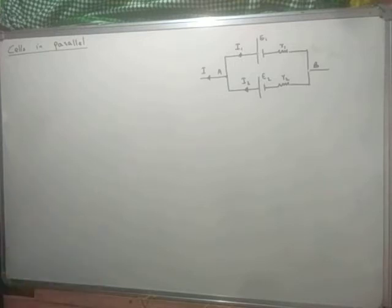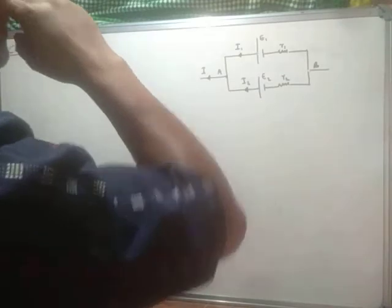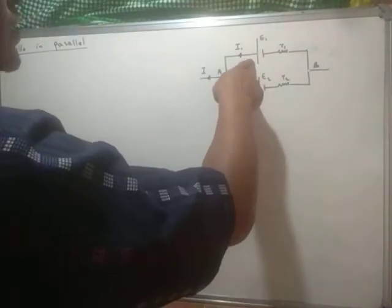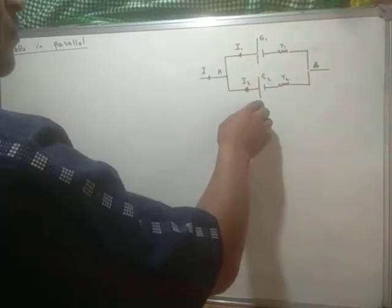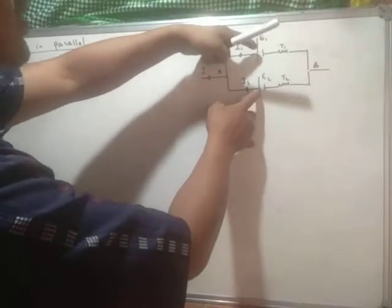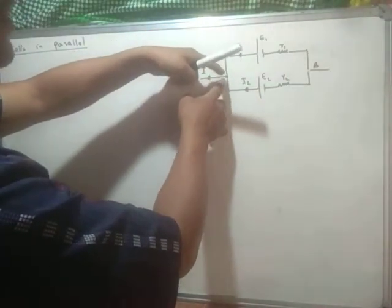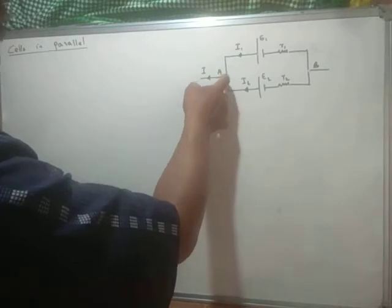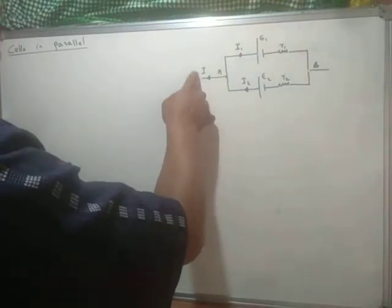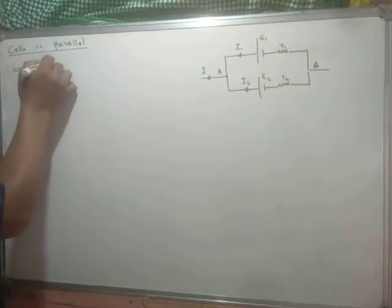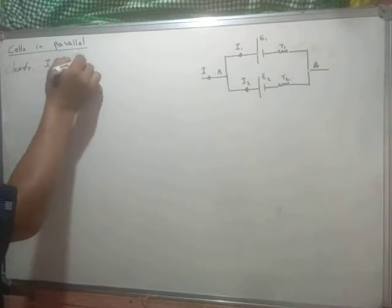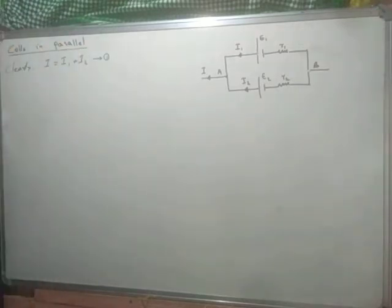Let us consider that the current produced by the first cell is I1, and the current from E2 is I2. These two currents meet at junction A and flow out of A. The current flowing out of A is I, so clearly I equals the sum of I1 and I2. This is my first equation.